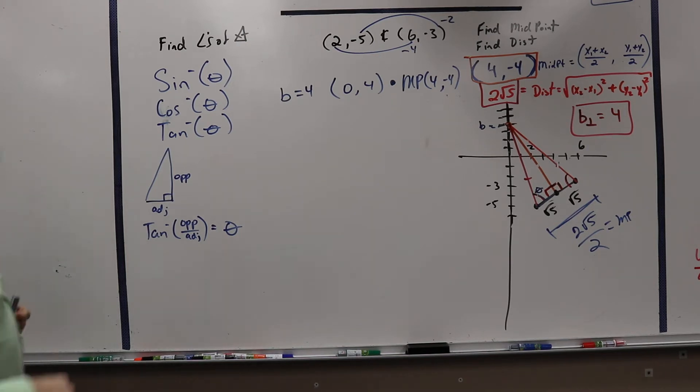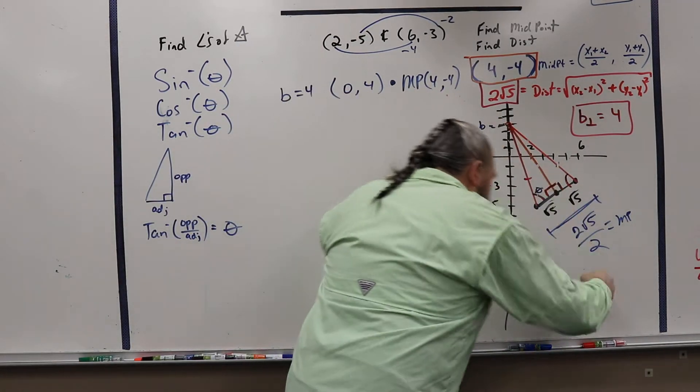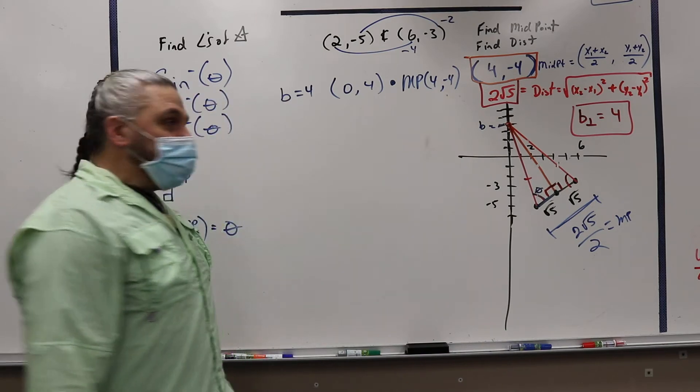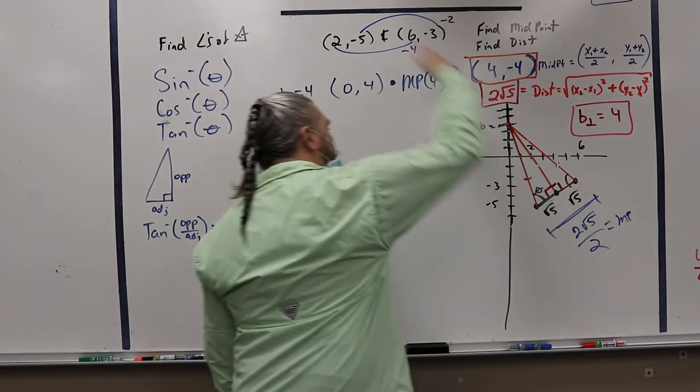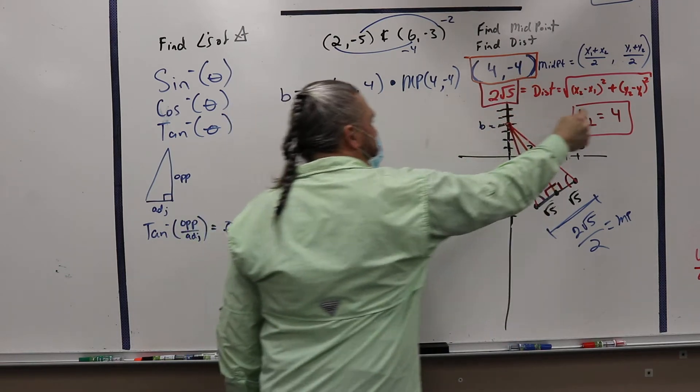So, we were able to find the midpoint. We found the distance to the bottom of the line. We cut that distance in half and found it to be the square root of 5. We know that the perpendicular line goes through the point (4, -4), and we know that the y-intercept is 4.